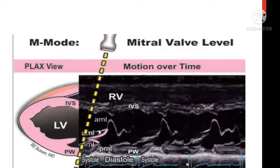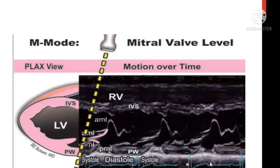You can perform M-mode at the mitral valve level. On M-mode you will see: at the top, the right ventricular area; followed by the septum; then the open area which is the left ventricle; the up-and-down deflection representing mitral valve movement; the posterior wall of the left ventricle; and the white pericardium behind it. These measurements are important for calculating ejection fraction and other estimations.